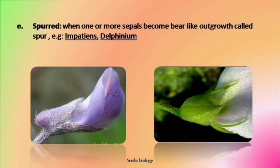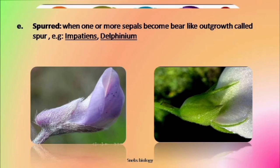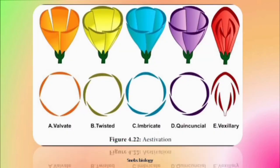Next modification is spurred — when one or more sepals become a bag-like outgrowth called a spur; for example, Delphinium. We will also discuss one more thing related to sepals after we are done with the petals or corolla, that is aestivation. Aestivation is the arrangement of the whorl.